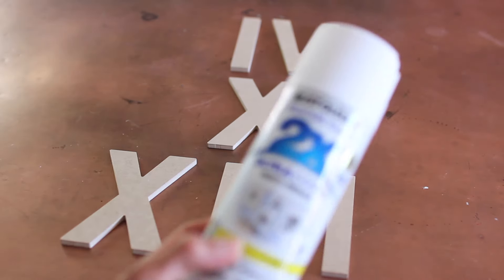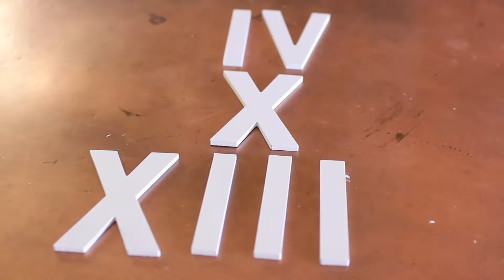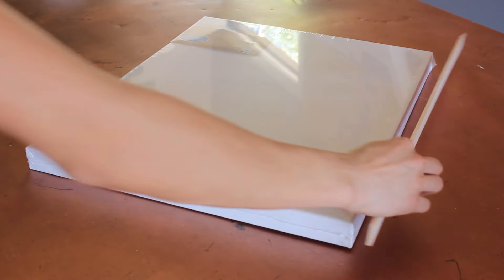Whatever letters that you want to put on, you're just going to go ahead and spray paint them whatever color that you want. I'm doing white on white for a more minimalistic look. I'm actually doing our anniversary in roman numerals and I absolutely love it. It's a little bit more chic than just numbers.